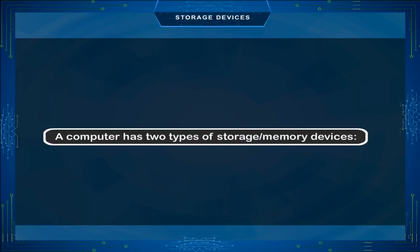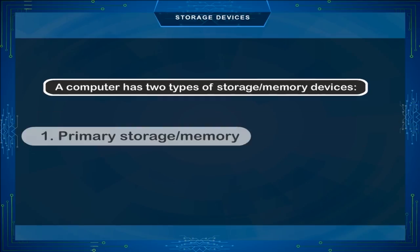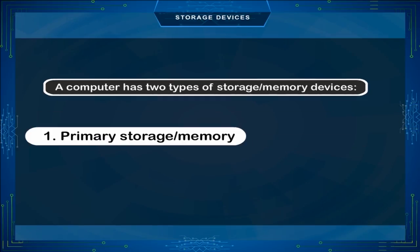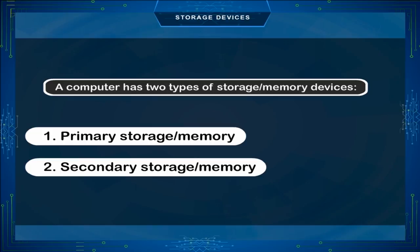A computer has two types of storage or memory devices: 1. Primary storage or memory, and 2. Secondary storage or memory.